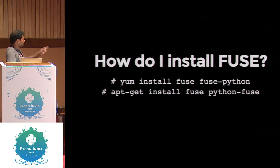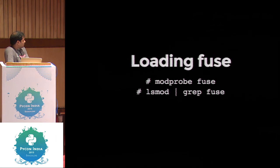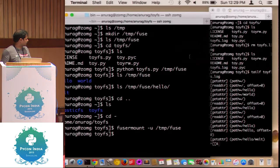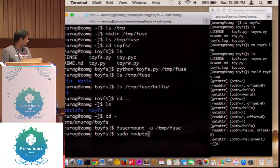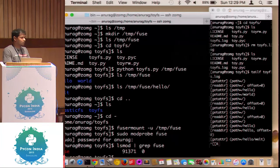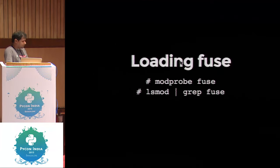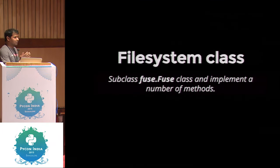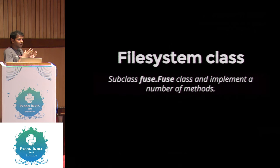To install FUSE, you need to install `fuse-python`, or on Ubuntu/Debian, `python-fuse`. To load the FUSE kernel module, use `modprobe` — same way as for XFS, just do `sudo modprobe fuse`. That should show the kernel module loaded. The first thing you need to do to implement a FUSE file system in Python is create a subclass of `fuse.Fuse` and implement a number of methods. We saw in the log two methods being called: `getattr` and `readdir`.